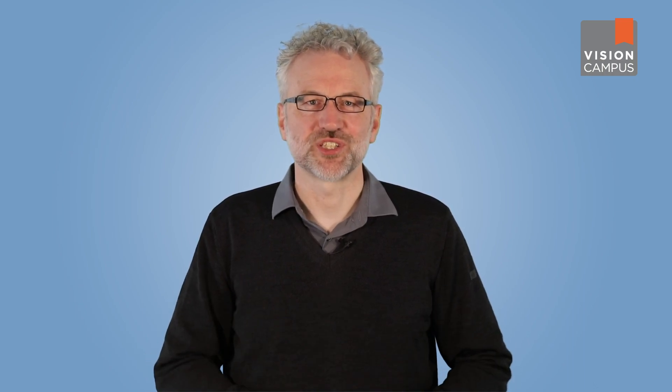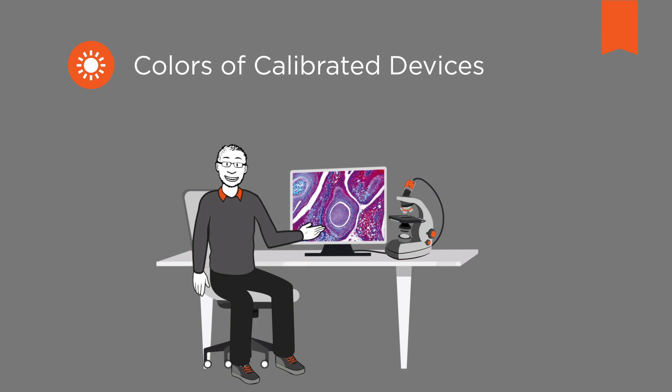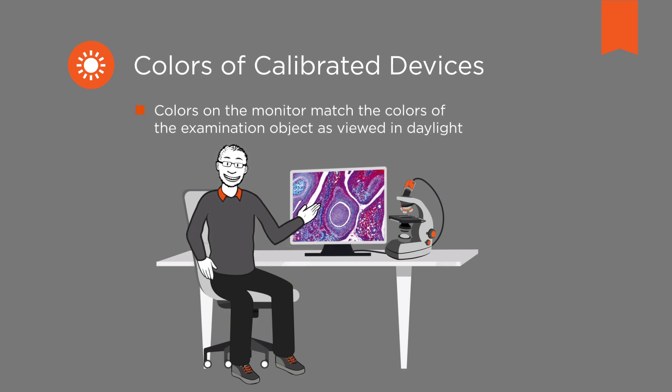Standardization leads to high accuracy, including high color fidelity. The process in which color reproduction is standardized is called color calibration. When image acquisition devices are calibrated, the colors of the acquired images seen on the monitor match the colors of the examination object as viewed in daylight.